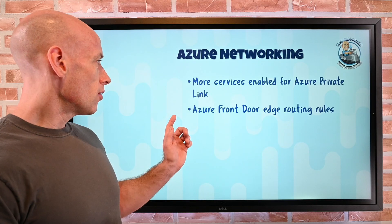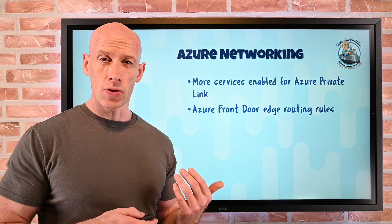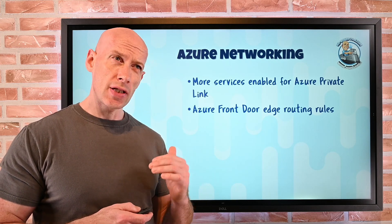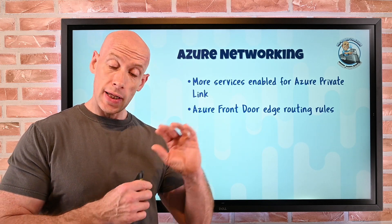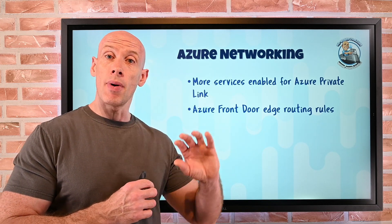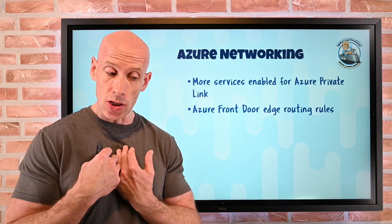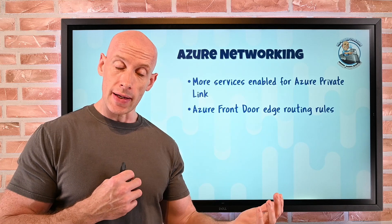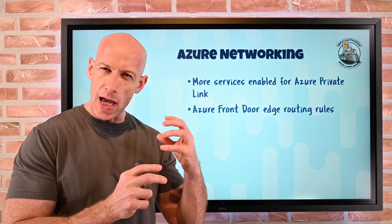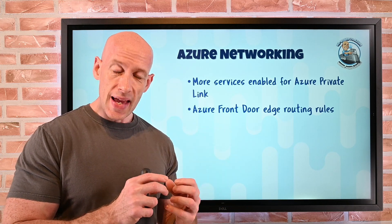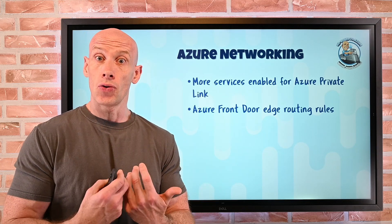Looking at Azure Front Door, we now have more edge routing rules. I can do things on the edge like requiring HTTPS, distinguishing between mobile and desktop to route to the right version of a page, do redirects, and rewrites. There's a whole set of matching conditions and actions I can take at the edge of Front Door, enabling a much richer set of functionality.